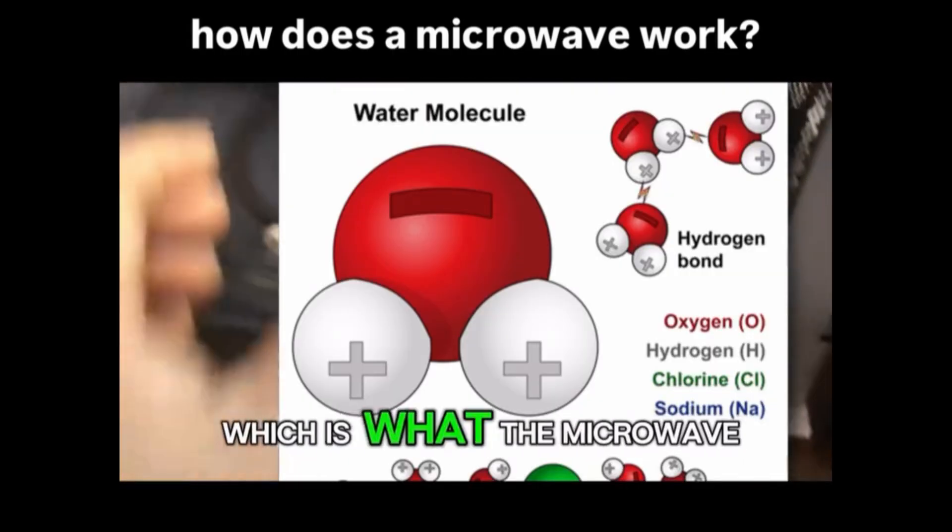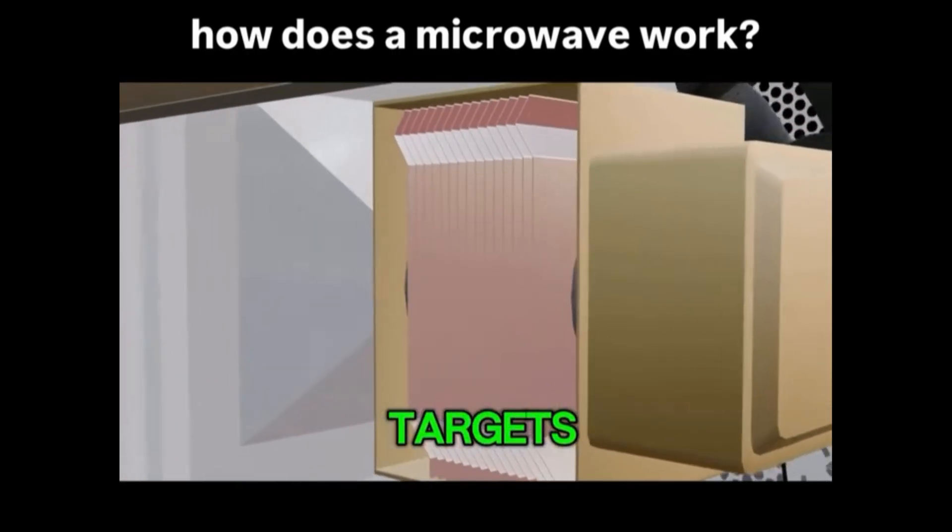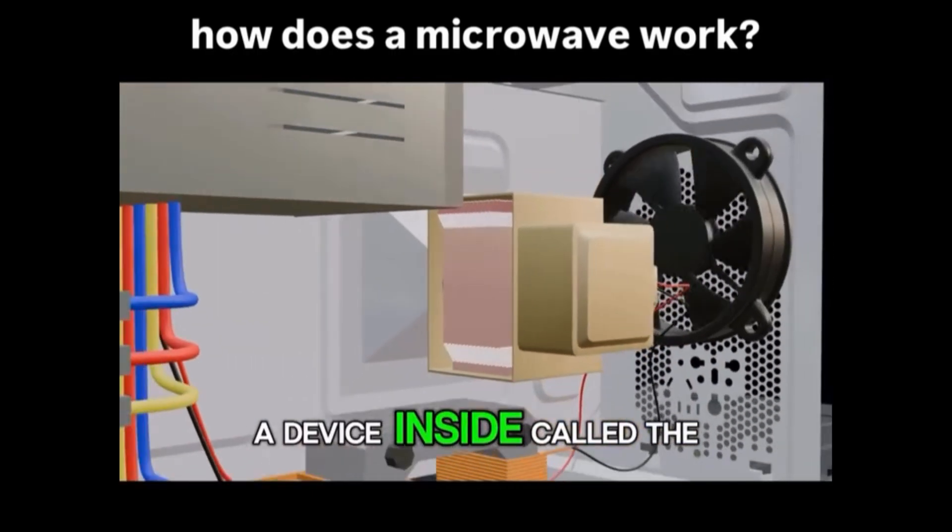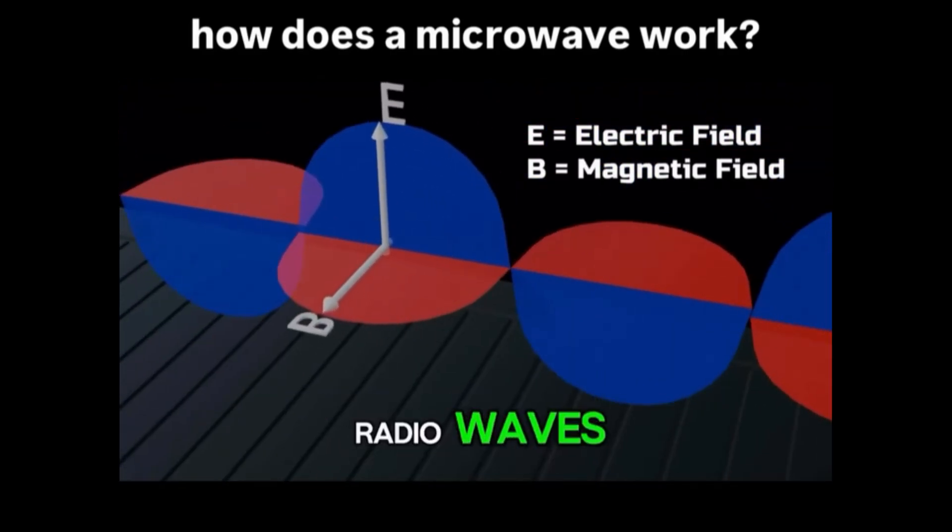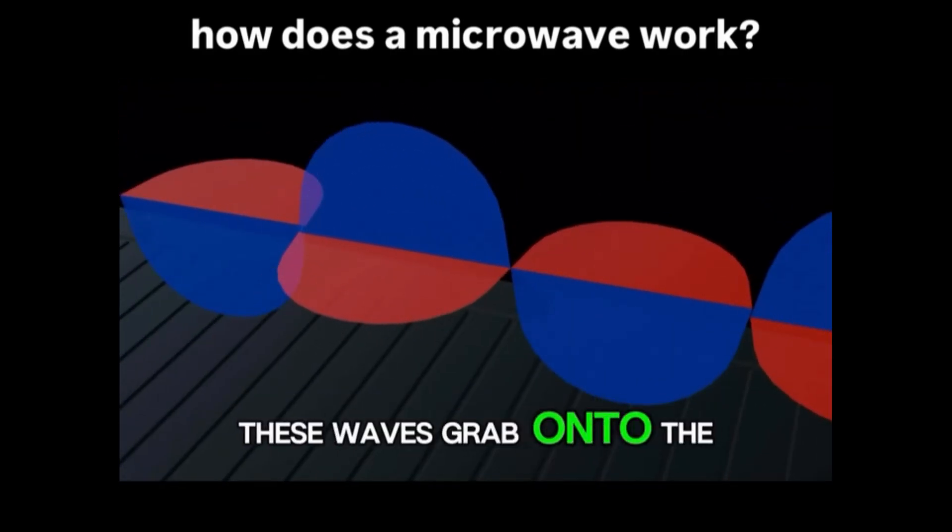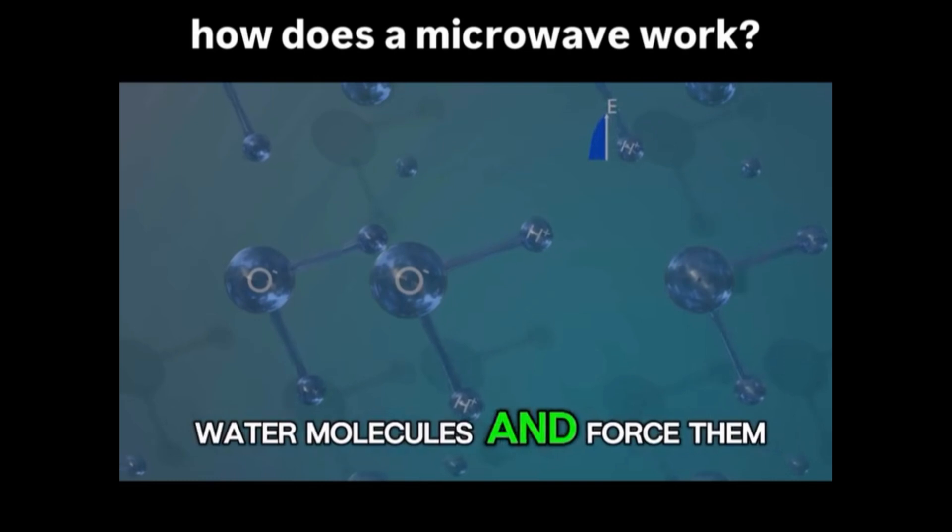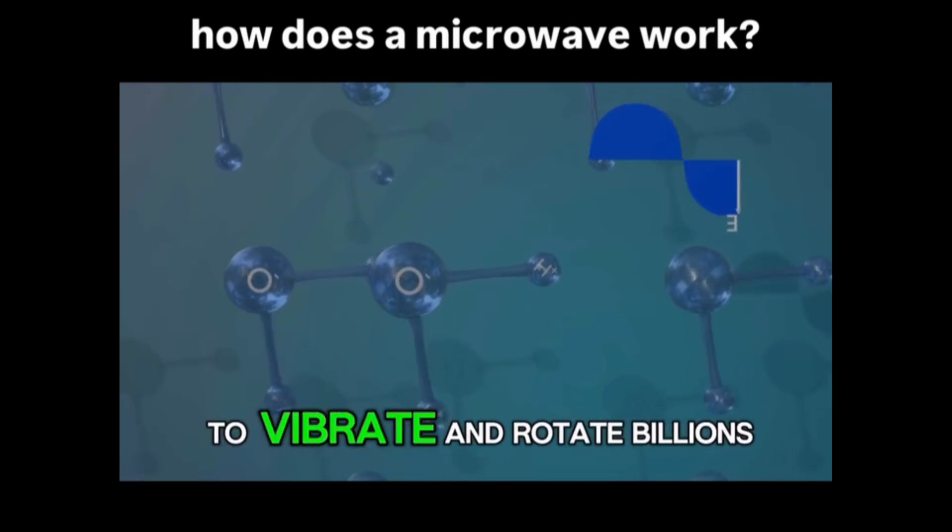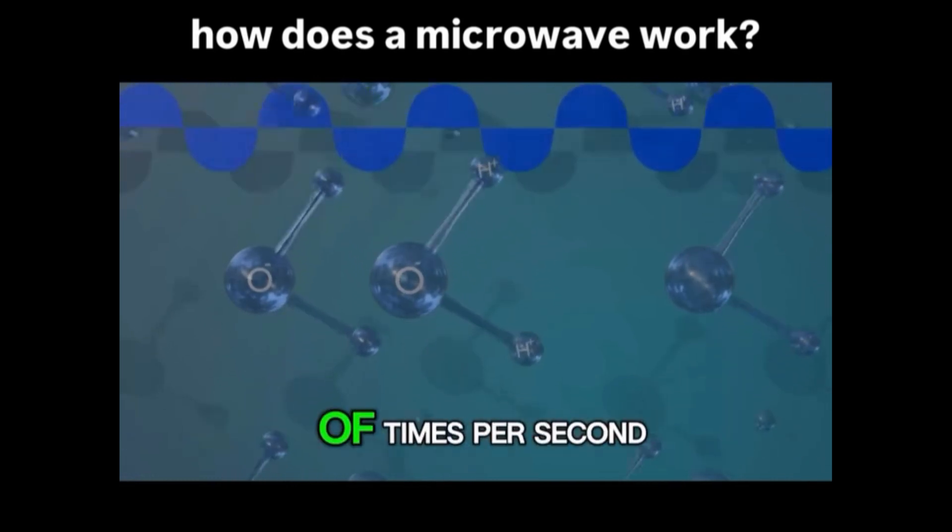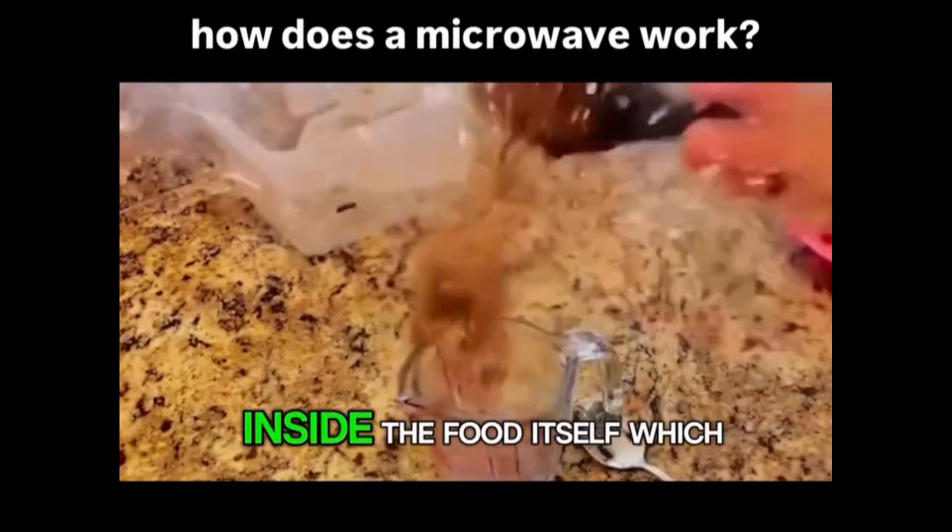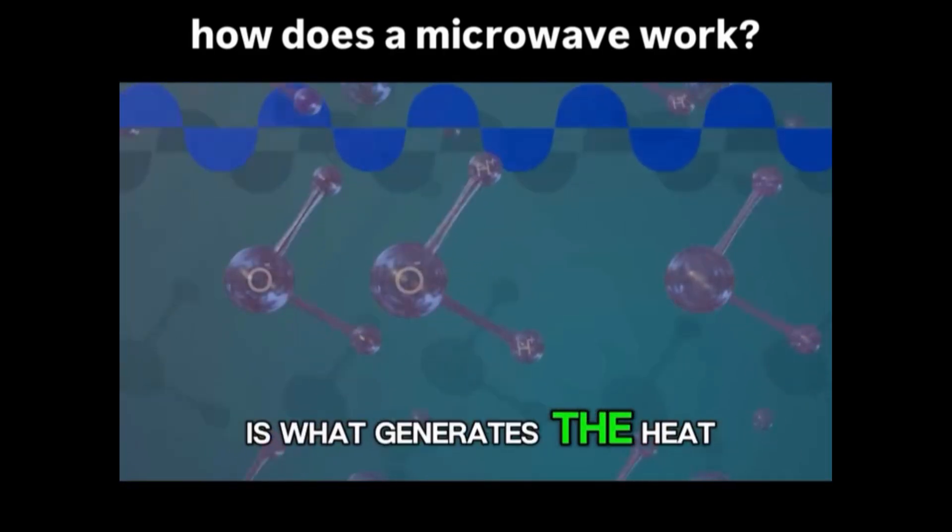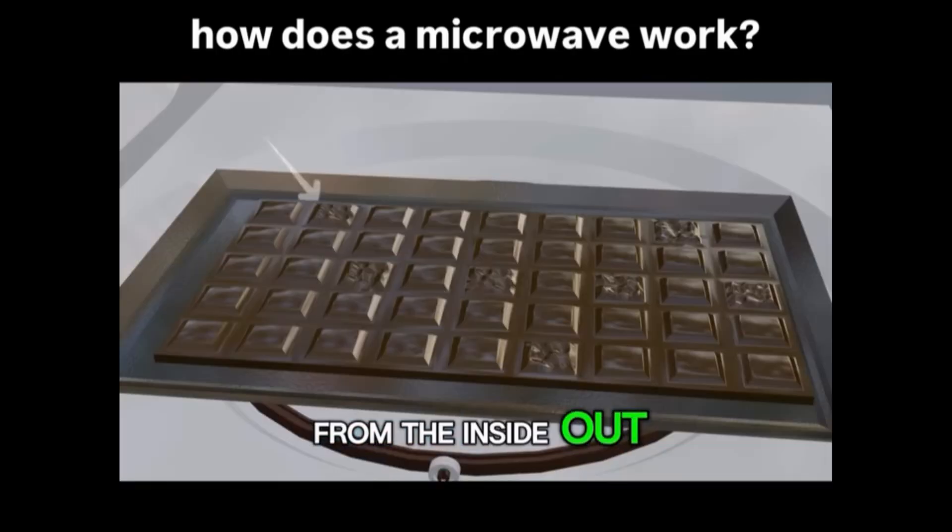A device inside called a magnetron shoots out high-frequency radio waves. These waves grab onto the water molecules and force them to vibrate and rotate billions of times per second. This creates massive friction inside the food itself, which is what generates the heat from the inside and out.